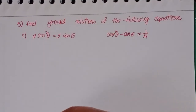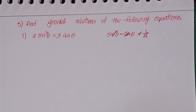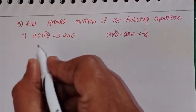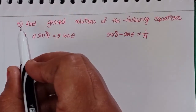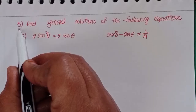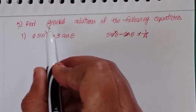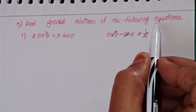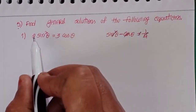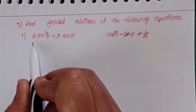Hi viewers, this is Shaheen and welcome to my channel. Today we will discuss Intermediate First Year, Chapter 7, Trigonometric Equations, Exercise 7a — the first problem and fifth problem: find general solutions of the following equations.